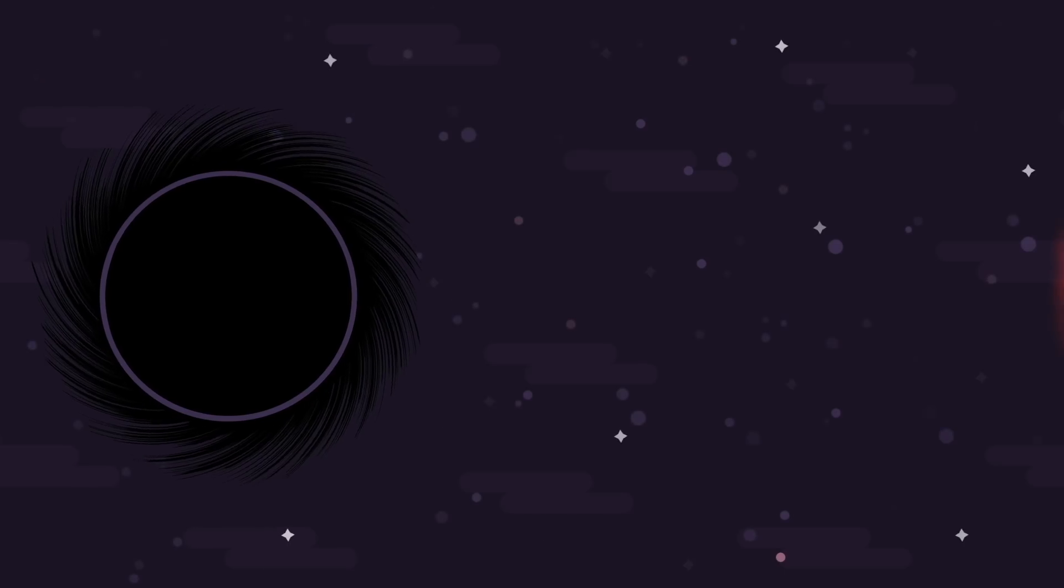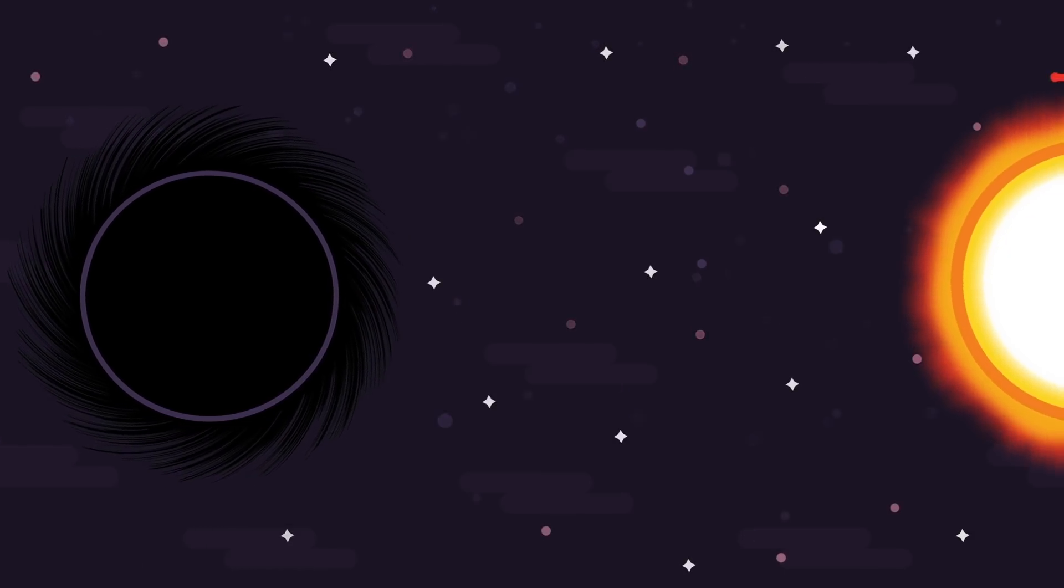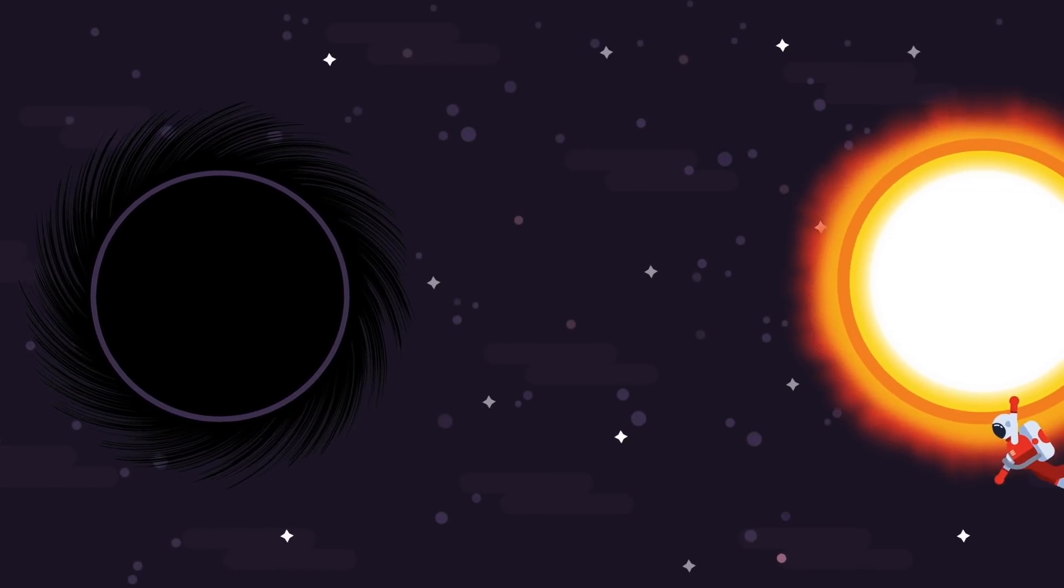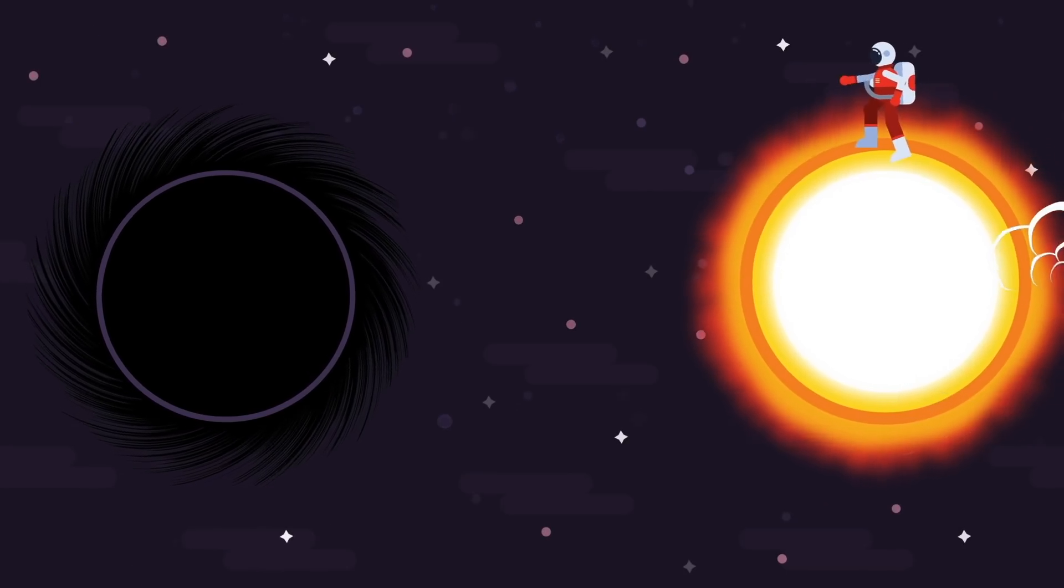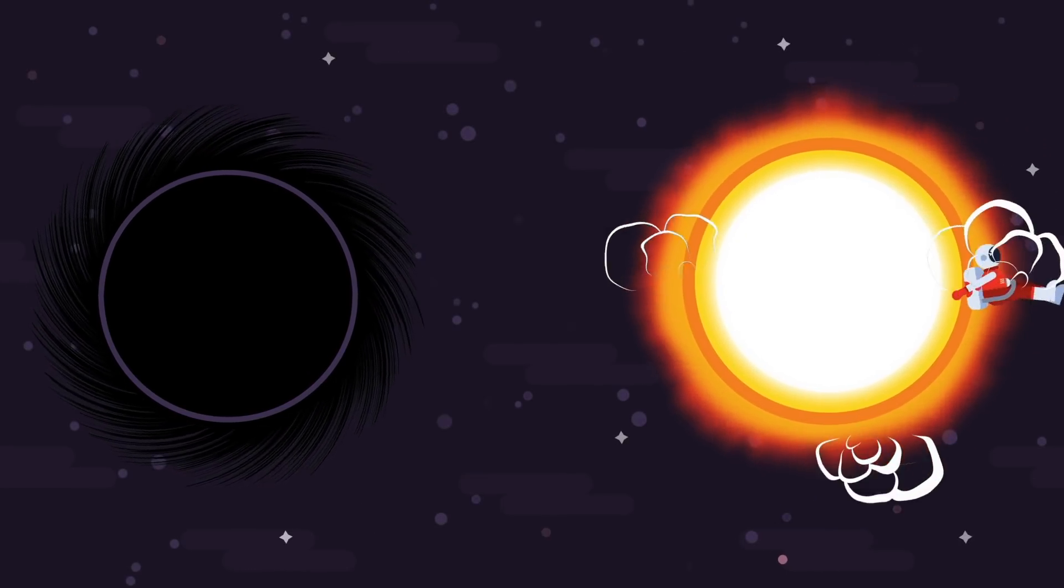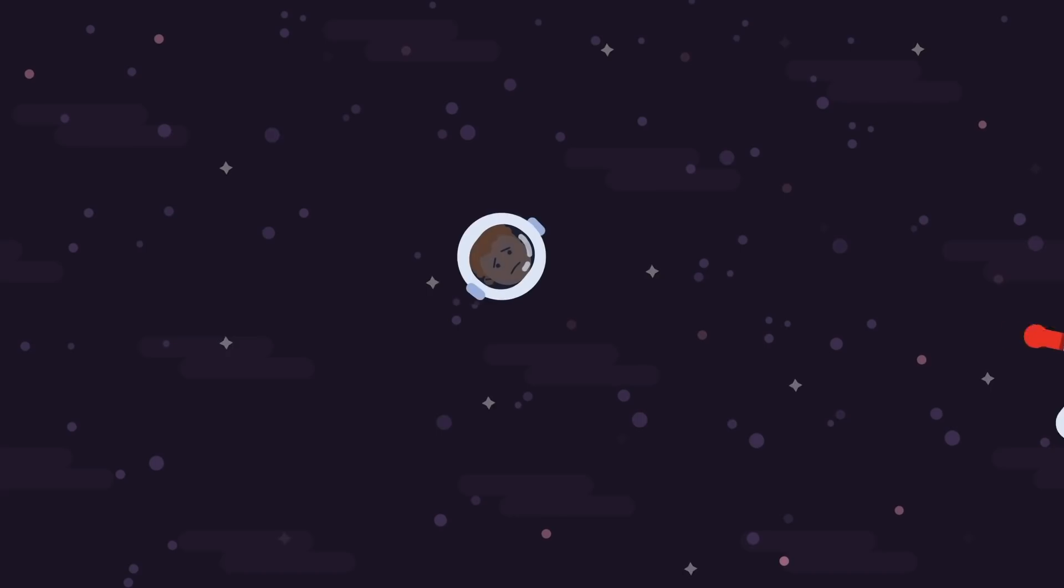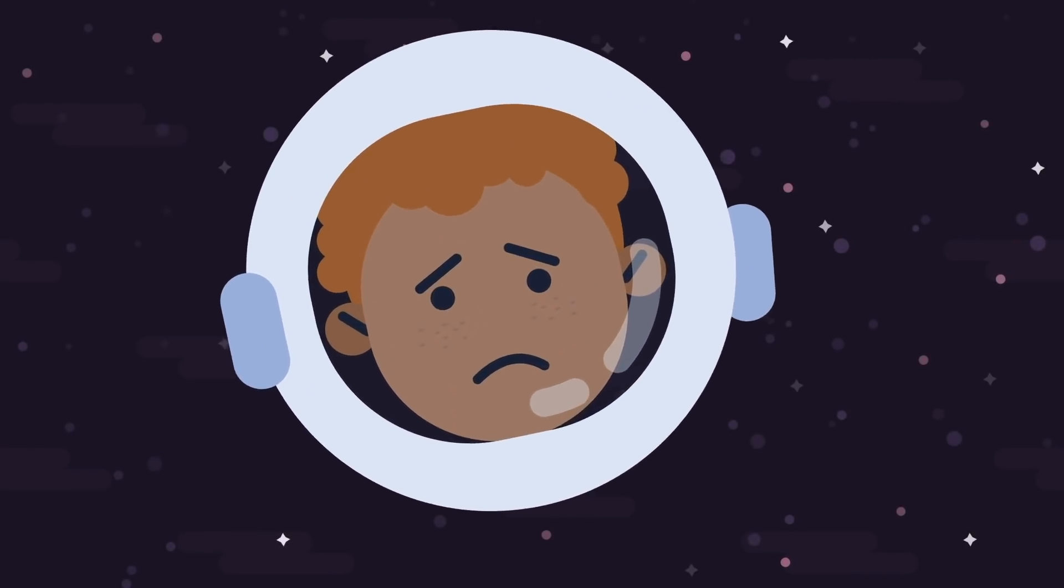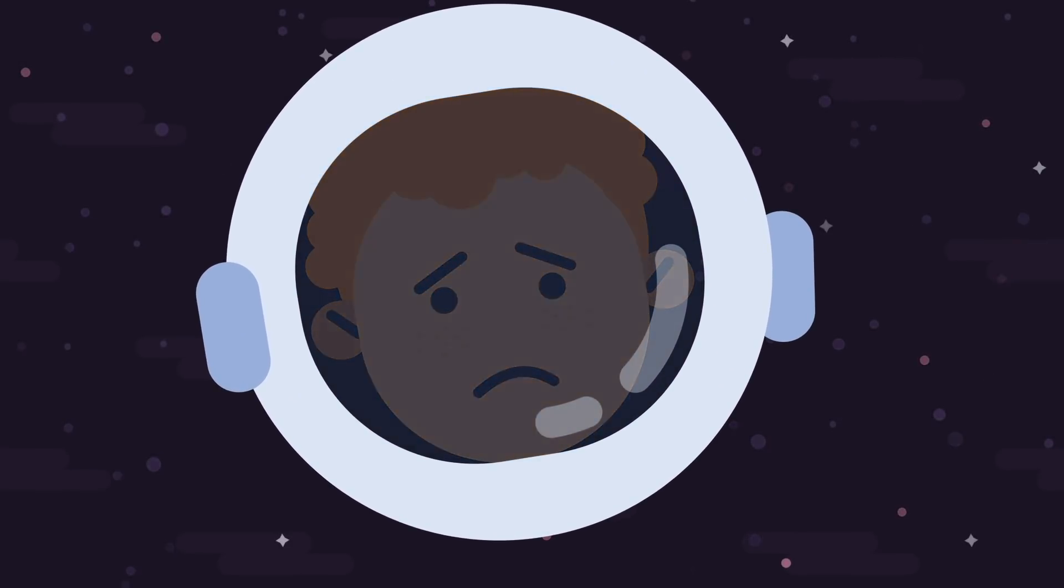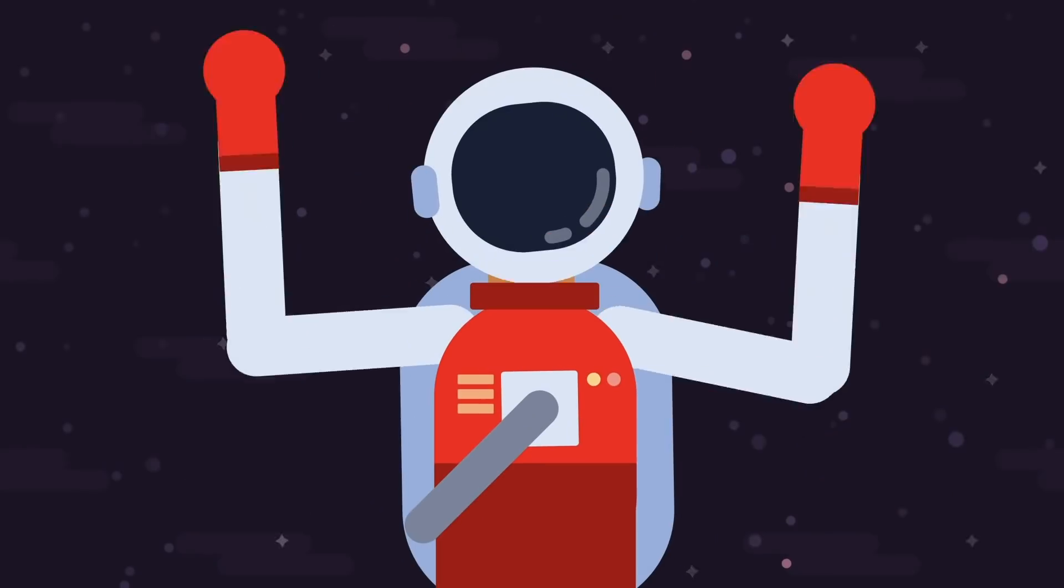So a supermassive black hole could definitely swallow and destroy the Sun. We would just need to somehow push the Sun close enough to a known black hole for the black hole's immense gravitational pull to do its thing. The issue is, how could we get the Sun close enough without being pulled in ourselves? All in all, this isn't greatly feasible either.